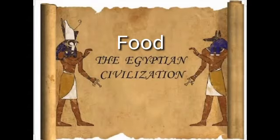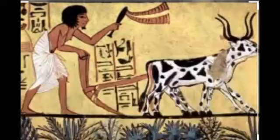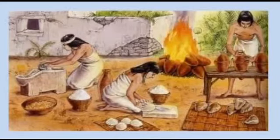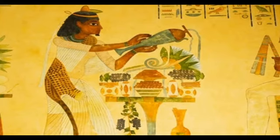Food of the Egyptian civilization: Wheat, millets and barley were the main crops. Bread was made from wheat and barley. People ate fruits and vegetables such as dates, grapes, apples, peaches, figs, pomegranates, onions, garlic, turnips and cucumbers. Wine was a popular drink among the rich.